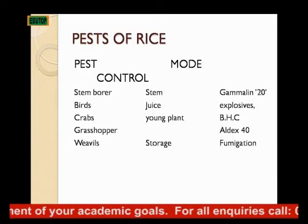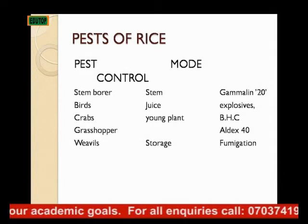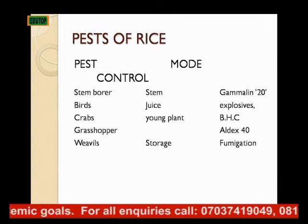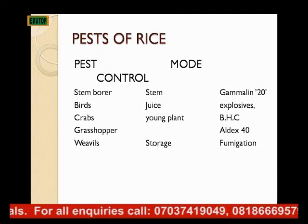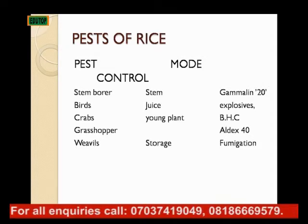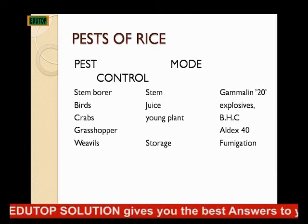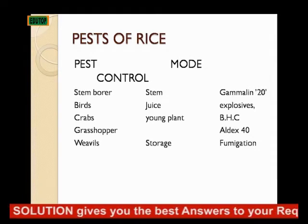It feeds on the leaf of rice, and you can control it by using adult spots. These are chemicals that you can get from stores or farmers or agro-services around.